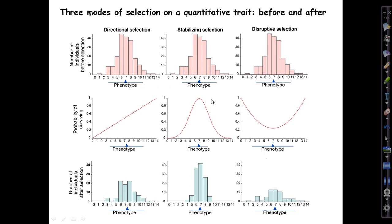It is presumed that stabilizing selection occurs on many kinds of traits. In our own species it is very well documented on birth weight of newborn infants — it's bad to be too big and bad to be too small, for somewhat different reasons, but intermediate birth weights are best, both for the mother and especially for the baby. This type of selection just keeps traits where they are, prevents them from moving, and reduces their variation somewhat.